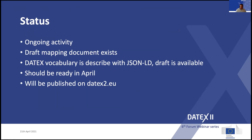Regarding current status — as I said, this is an ongoing activity. We have a draft mapping document describing a mapping from the UML model to JSON-LD, covering classes, attributes, and relations between classes. It will not be a complete mirror of the UML model and XML, but it should cover what is needed in this domain. We have updated the tools so we can generate the DATEX vocabulary in JSON-LD format from the UML model, and draft documents in JSON-LD format are already available.